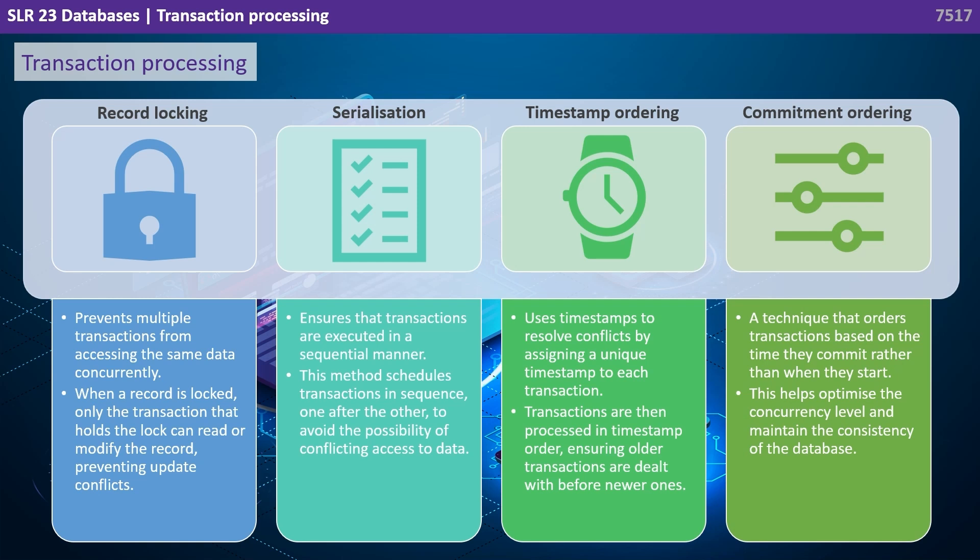Timestamp ordering uses timestamps to resolve conflicts by assigning unique timestamps to each transaction. Transactions are then processed in timestamp order, ensuring older transactions are dealt with before newer ones. Commitment ordering is a technique that orders transactions based on the time they commit rather than when they start, helping to optimise concurrency and maintain database consistency.